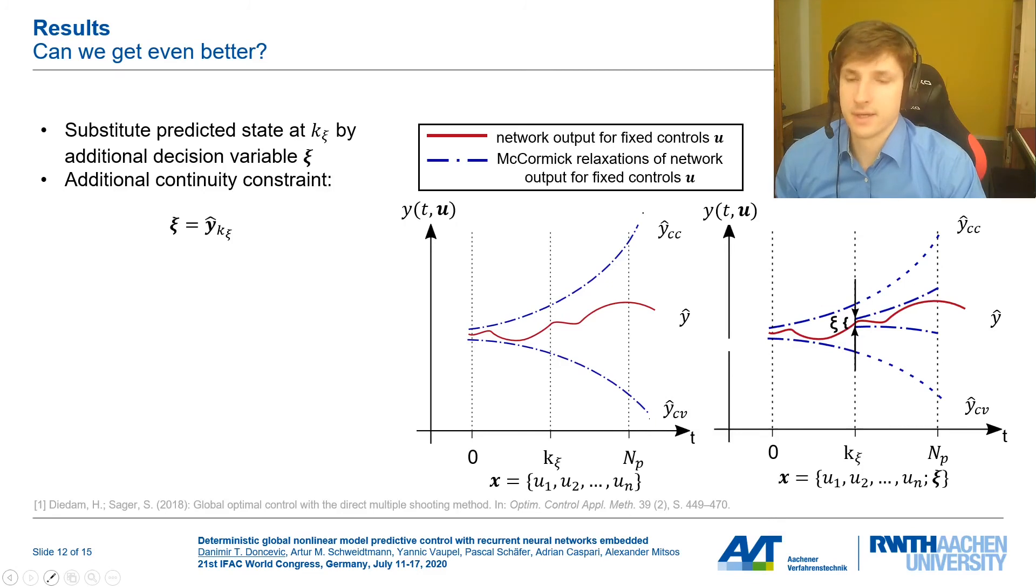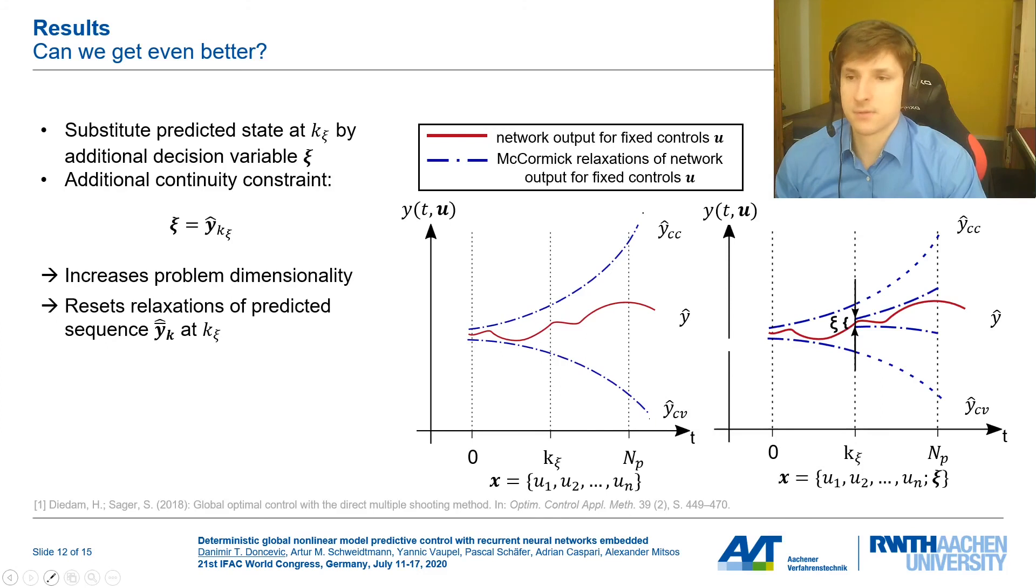Yeah, and this is great. But the trade-off here is that we're adding variables to the decision variable vector which is obviously costly in global optimization. This is also exactly the reason why we don't want to do it at each timestep but we're just doing it sparsely here. Note that this idea is somewhat related to the concept of multiple shooting and a similar approach was actually used by Diedam and Sager for global optimization of shooting methods. In the next slide we're going to look at results to show how much this trade-off can save us in computational time.